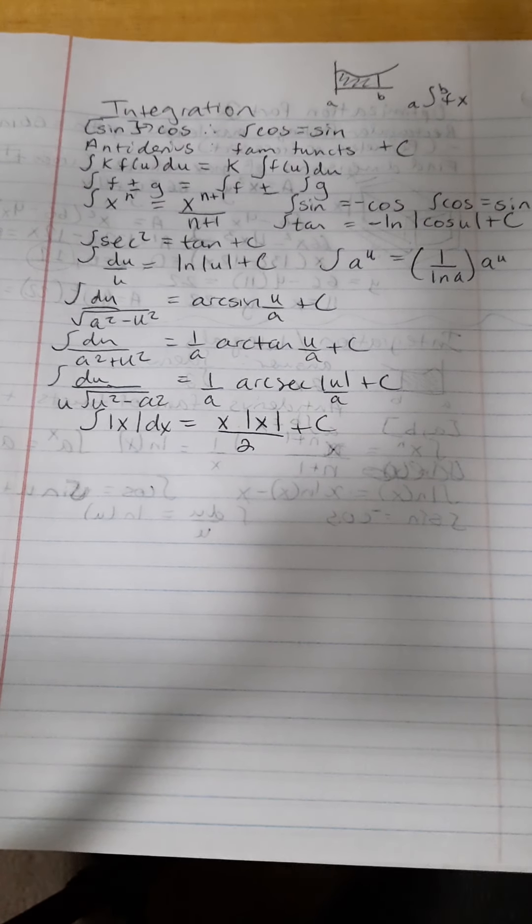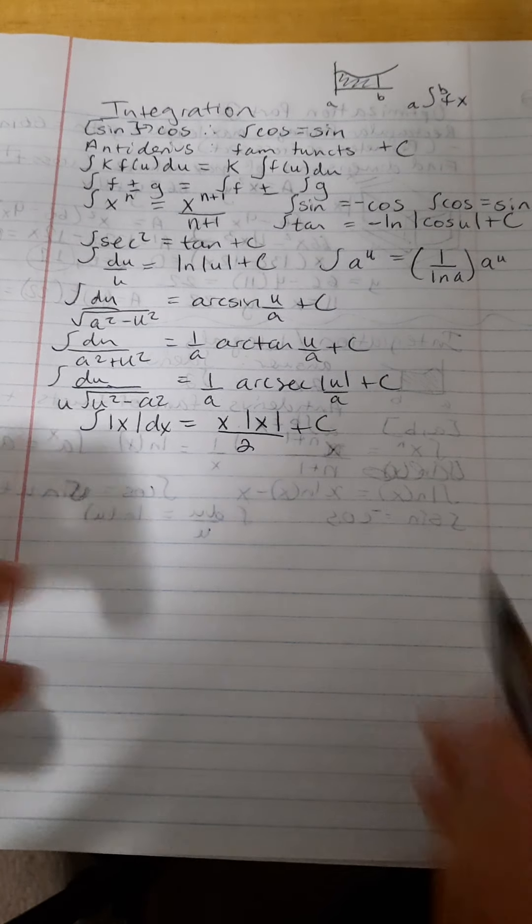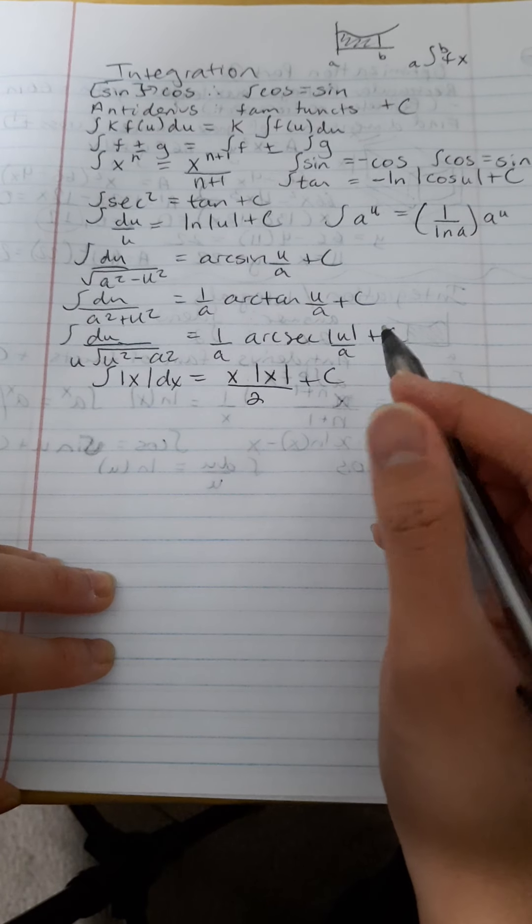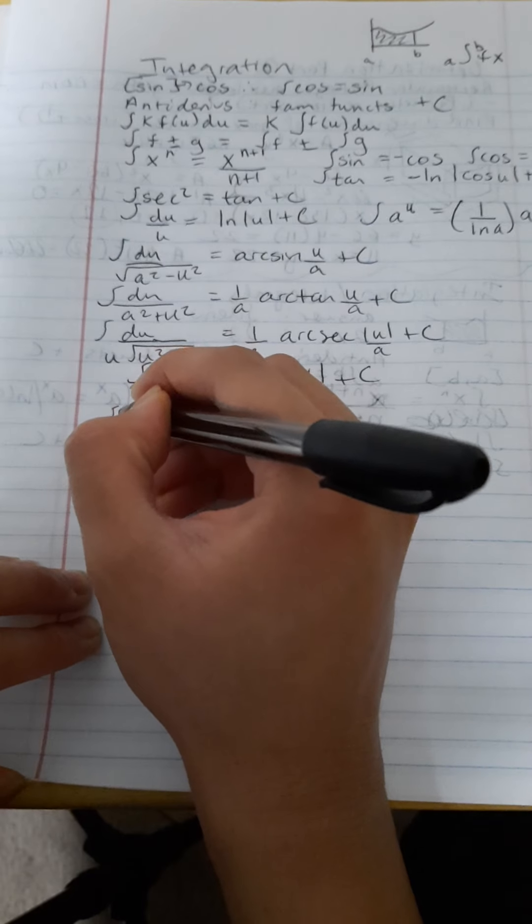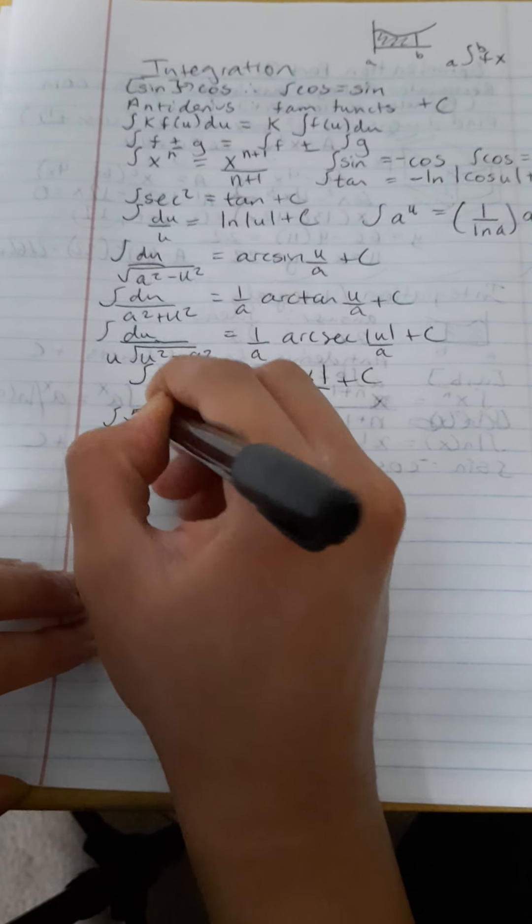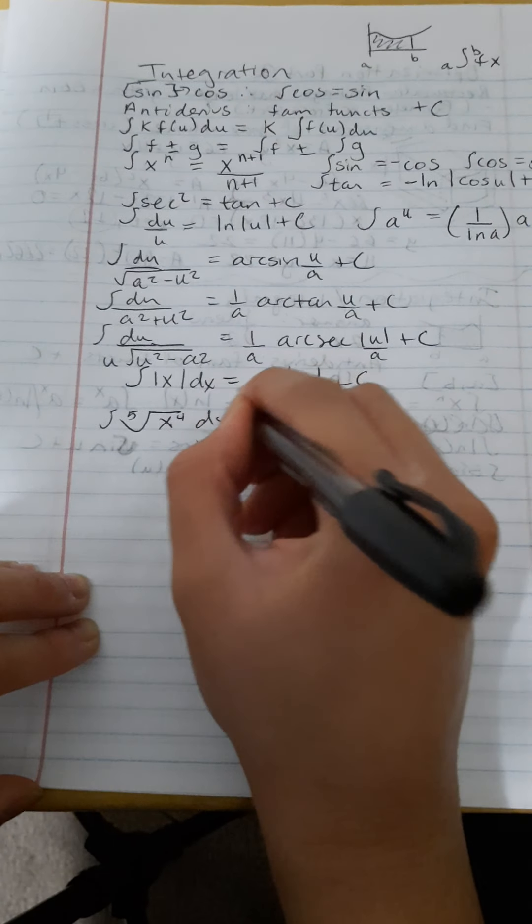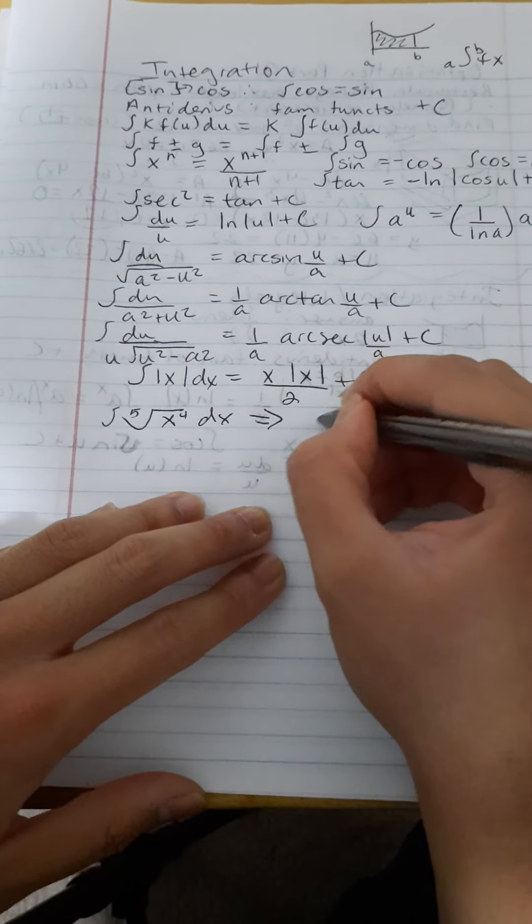Let's do some examples now, and we're going to try some of the ones, hopefully, with rules that we could apply now because we know them. Okay, so let's first start off with something like integral of 5th root of x to the 4th dx.